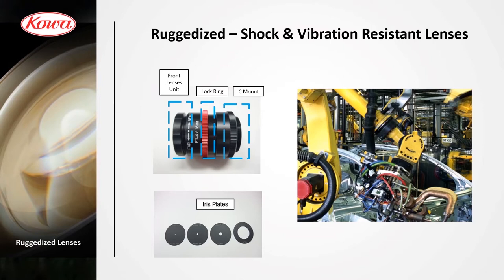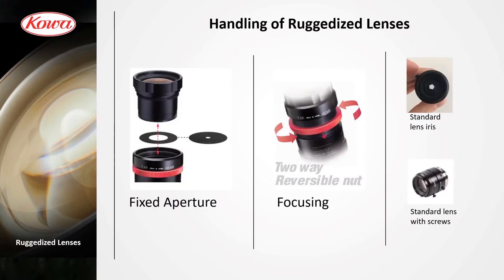The ruggedized lens has a locking ring for fixing the focus. You can take off the front part and put in the interchangeable iris plate shown in the picture below. Standard lenses usually have iris blades which are opened and closed mechanically — these are sensitive to vibrations, and the friction of the iris blades can loosen dust in conditions of vibration or shock. The standard lens also has screws, which can fall off in environments with a lot of vibration or shock.